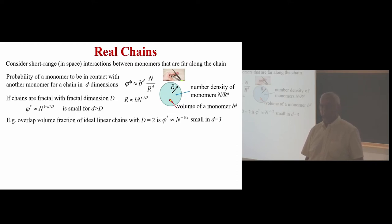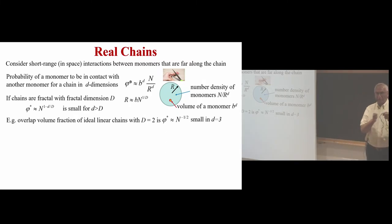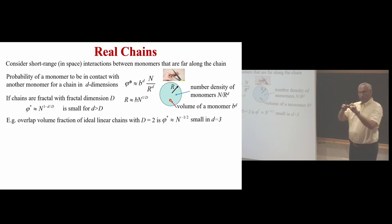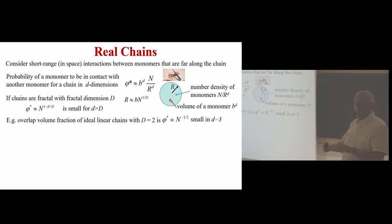These are interactions between monomers far along the chain that get close in space. You can include nearby neighbors as well; stiffness accounts for nearby correlations. The Kuhn length B already accounts for this short-range possibility. So we're only talking about far-away contacts. For three-dimensional space with ideal chains where D equals two, you get 1 minus 3/2, so phi-star is proportional to N^(-1/2) = 1/√N — very small for large N. The probability of your monomer encountering any other monomer is very small.